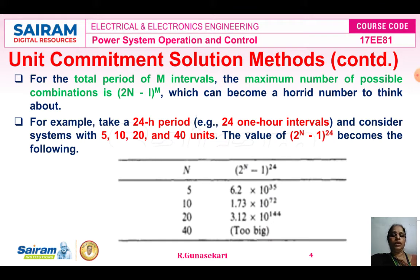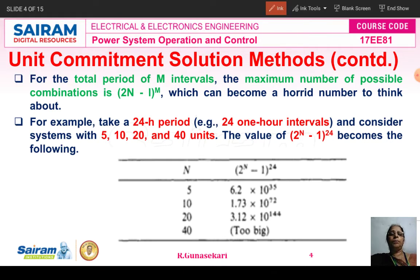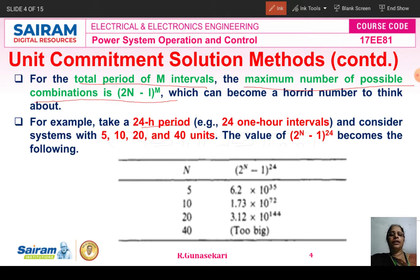Now, you can see in the tabular column — over the total period of M intervals, the maximum number of possible combinations is (2^N − 1)^M. For a 24-hour period with 5, 10, 20, and 40 units, we calculate (2^N − 1)^24. For N=5: 6.2 × 10^35. For N=10: 1.73 × 10^72. For N=20: 3.12 × 10^144. For N=40: the number is extremely large.